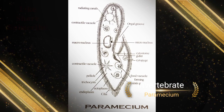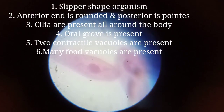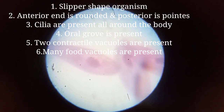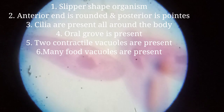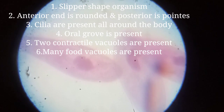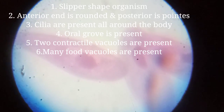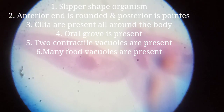On the ventral surface, it has an oral groove which leads into the cytostome. Many food vacuoles and two contractile vacuoles are present. It has a slipper shape, which we can identify from the slide.